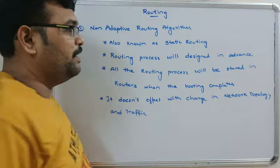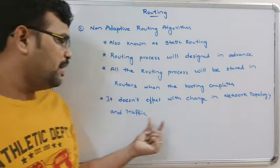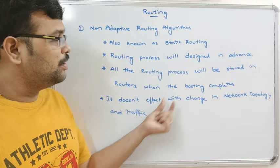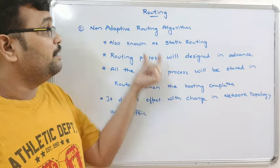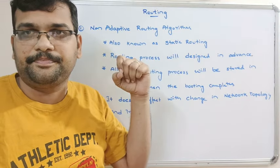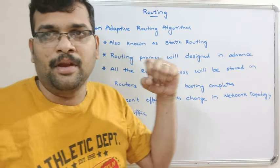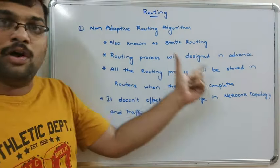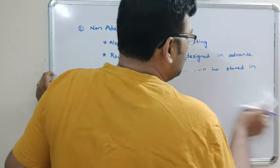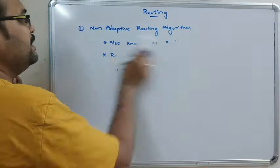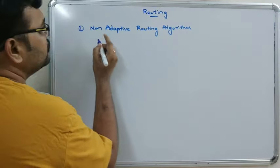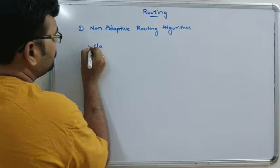This non-adaptive routing does not get affected by changing network topology and traffic. Whenever the network topology is changed or any traffic changes, that impact will not be done on the routing process for this non-adaptive routing algorithm. This non-adaptive routing algorithm is further classified into two ways.